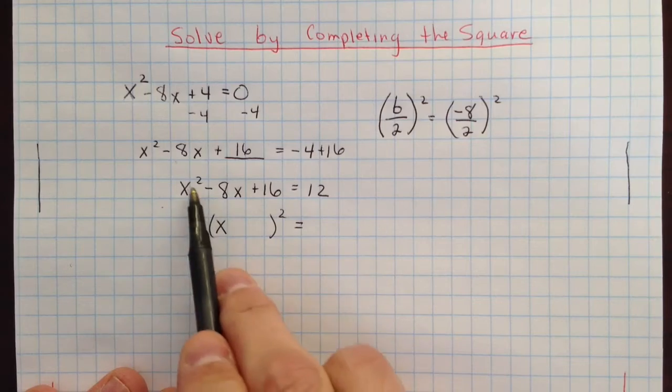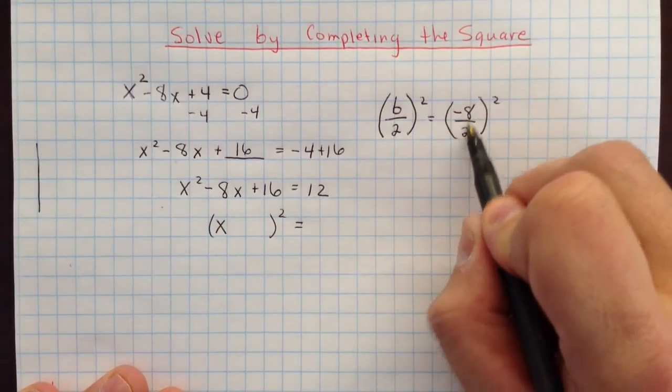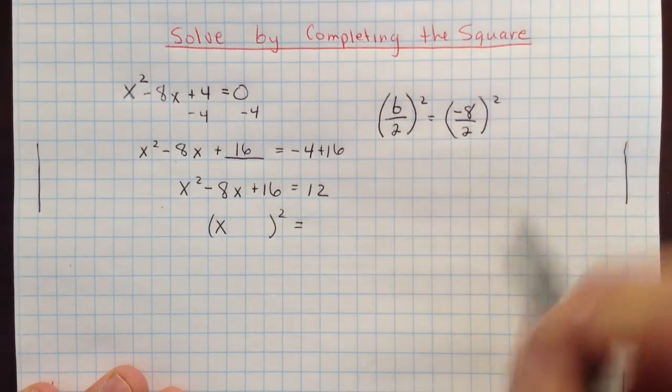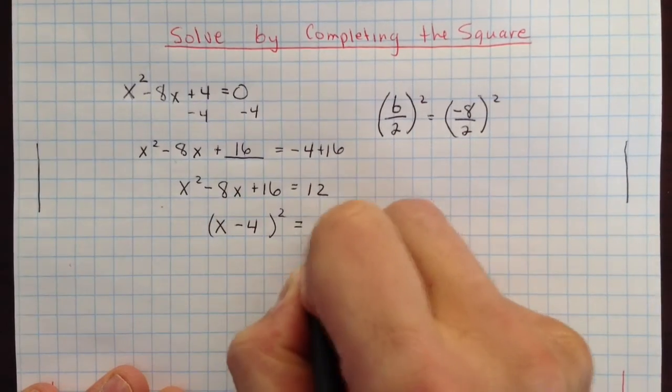The x comes from the square root right here, and then over here, if you remember, we have negative 8 divided by 2, which is negative 4. That amount that's inside those parentheses before you square it is what goes right here. And we still have 12 here.